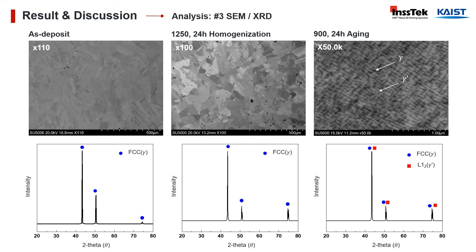We heat-treated this sample at 1250 Celsius degrees for microstructure homogenization, and aged it at 900 Celsius degrees. During the SEM analysis, the main characteristics of the heat-treated microstructure, gamma and gamma-prime phases, were observed. In nickel-based superalloys, this is a key factor for achieving high-temperature properties. We could corroborate the presence of this property through the XRD analysis, or X-ray diffraction, and we could identify before and after the heat treatment the FCC single phase. In addition, after heat treating the sample, an additional gamma-prime was observed in the face-centred cubic phase, which strongly confirms the presence of this property in our specimen.